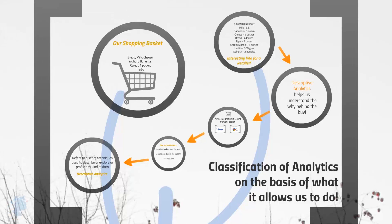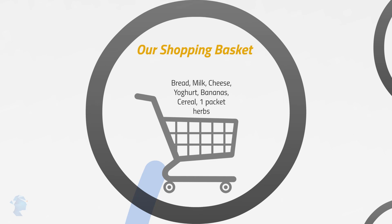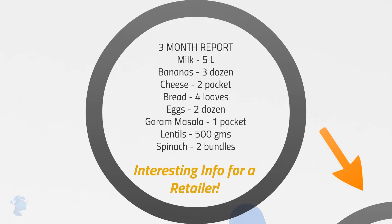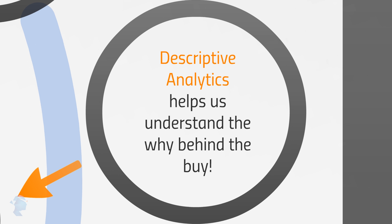But the most popular way of classifying analytics is on the basis of what it allows us to do. Let's take a particular situation involving data and see if we can come up with the types of analytics it allows us to perform. Let's go back to the supermarket to do our weekly grocery run. We would possibly put in our basket a loaf of bread, milk, cheese or yogurt, bananas, cereal, and a few other special items. If we were to create a report on the contents of our grocery basket over the past few months, there would be information on the number of liters of milk we bought, how many bananas we ate, and how often we bought spices. This is interesting information for a retailer because it helps understand the why behind the buy — and this is descriptive analytics.